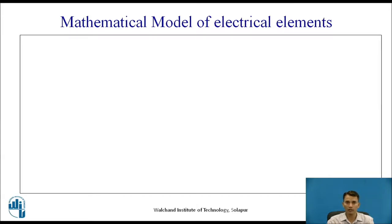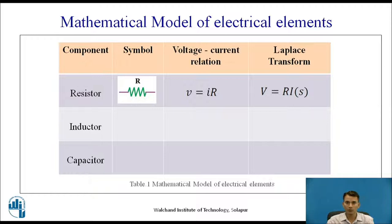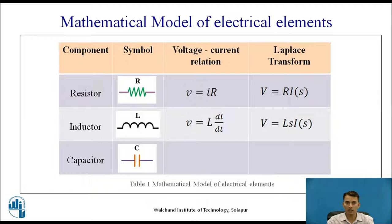Now let us see the mathematical model of electrical elements. There are three basic components: resistor, inductor, and capacitor. For a resistor, the voltage-current relation is V = IR, and the Laplace transform gives V(s) = R·I(s). For an inductor, the relation is V = L·dI/dt, and the Laplace transform gives V(s) = Ls·I(s). For a capacitor, the relation is V = (1/C)∫I dt, and the Laplace transform gives V(s) = (1/Cs)·I(s).